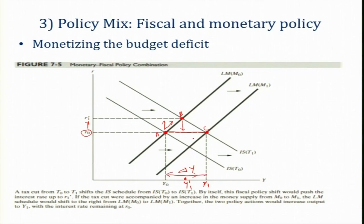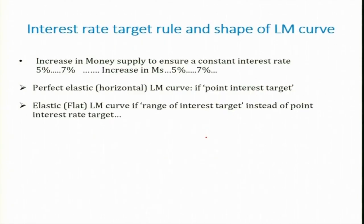This is also related to interest rate targeting. When policy makers do not want to see the rate of interest increase or decrease — if they want a constant rate of interest — this kind of policy is called an interest rate targeting rule. If they want to see the interest rate at a constant rate of, say, 5 percent, they have to increase money supply in the same proportion. Similarly, if they want the rate of interest at 7 percent, they will increase money supply at the corresponding 7 percent rate.